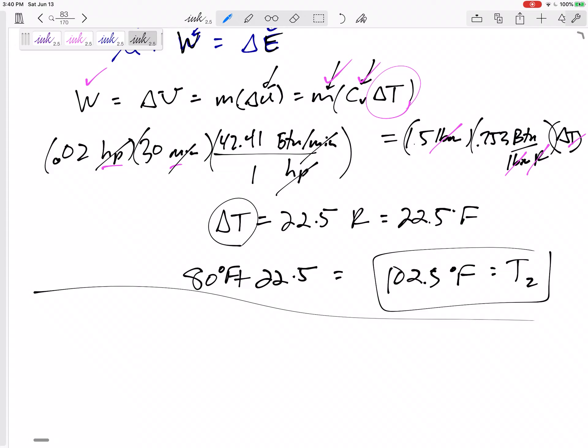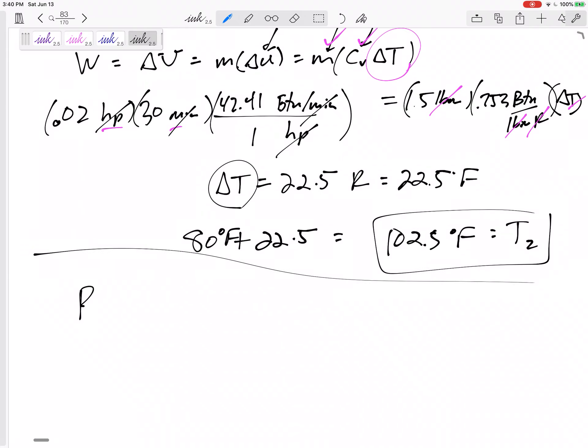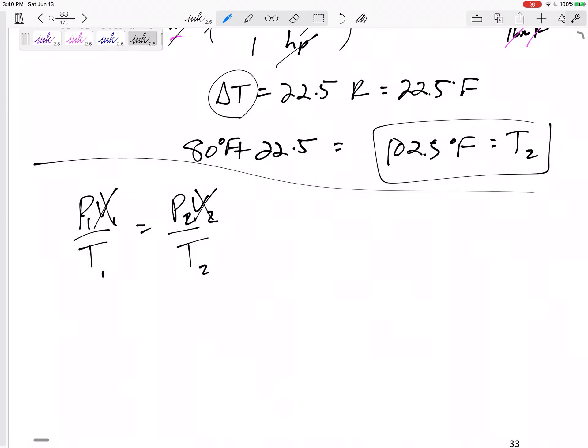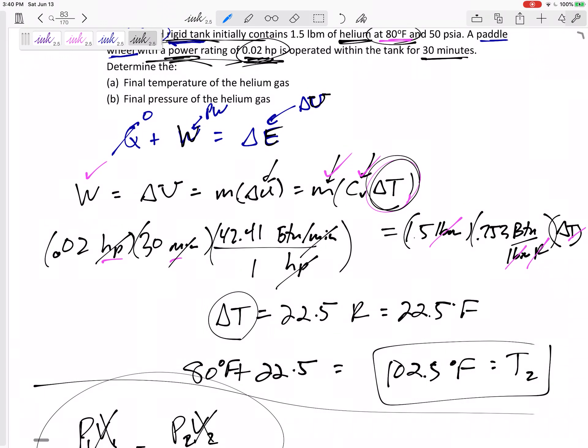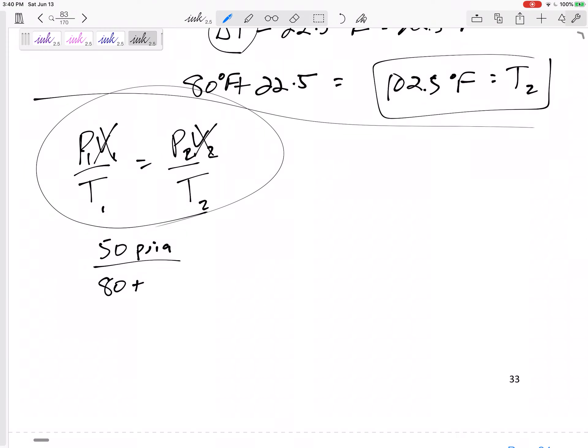It also asks for the final pressure. I could go around the block using PV equals RT, but I don't know V. But if I recognize that this is an ideal gas and it's a closed system, then P1 V1 over T1 equals P2 V2 over T2. The V is the same on the right and left-hand side. So P1 over T1 equals P2 over T2. P1 was 50 PSIA. T1 was 80, but ideal gas law has to be absolute temperature. So I need to add 460, P2 over 102.5 plus 460 to get P2 52.1 PSIA.